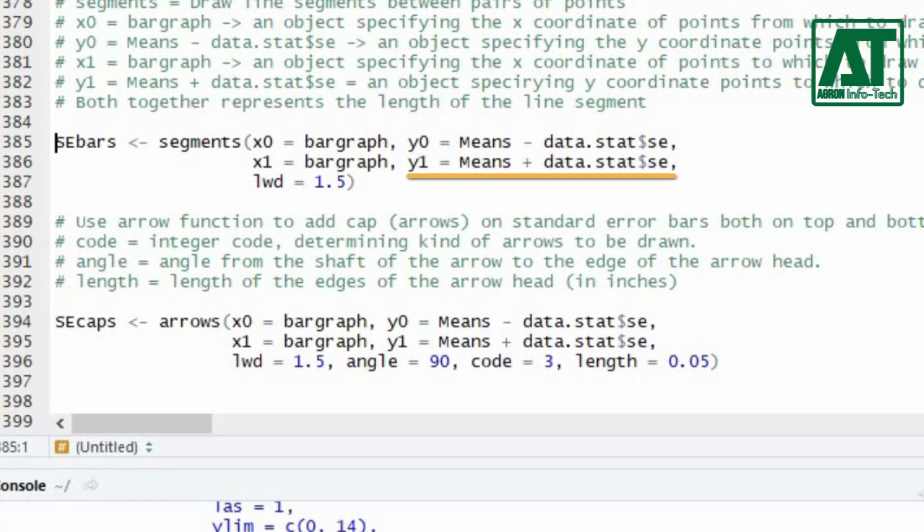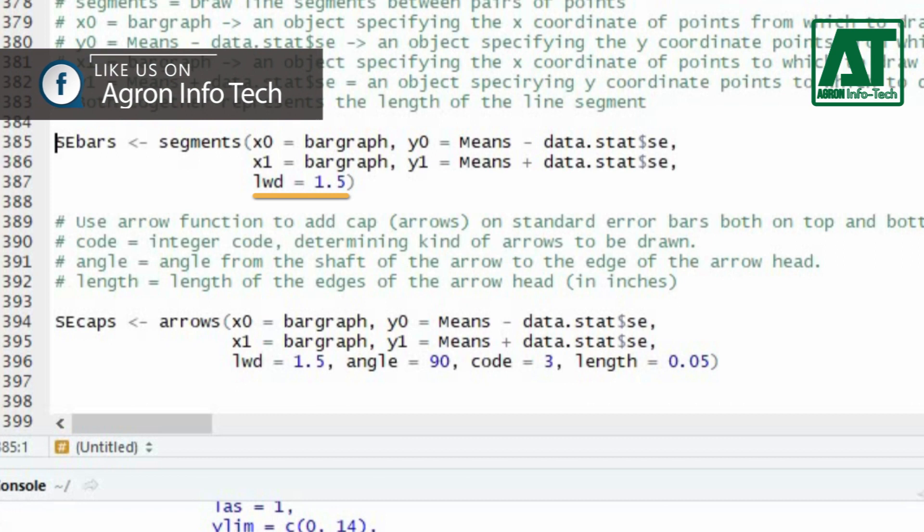Adding standard error to the means will show the upper bound of the line segment on Y coordinate. The difference of Y1 and Y0 represents the total length of the line segment. You can change the width of line segment by using lwd argument.